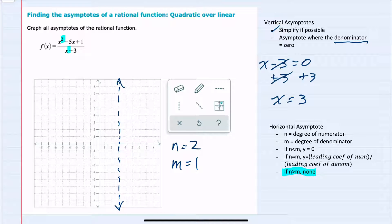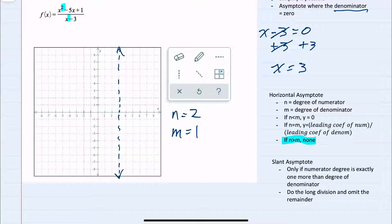However, there is one other possibility: we could have a slant asymptote. A diagonal asymptote here only occurs if the degree of the numerator is exactly one more than the degree of the denominator, which is the situation that we have here. The degree of the top is one more than the degree of the bottom. So we're going to do long division and omit the remainder.